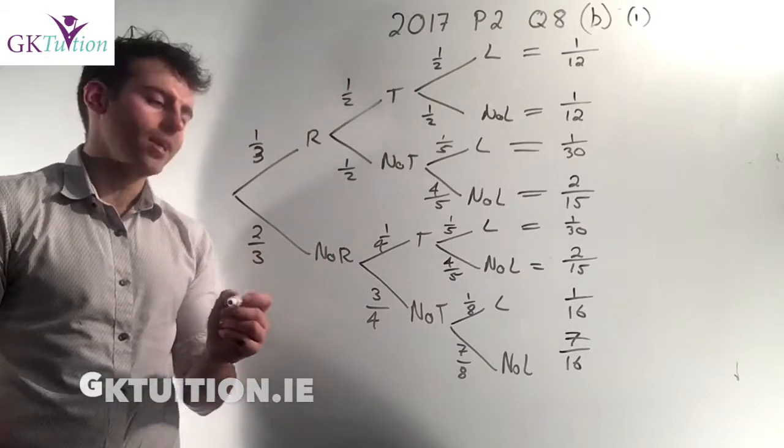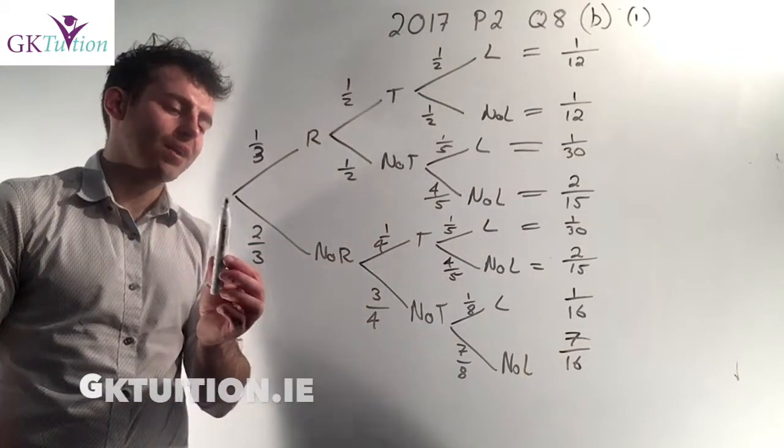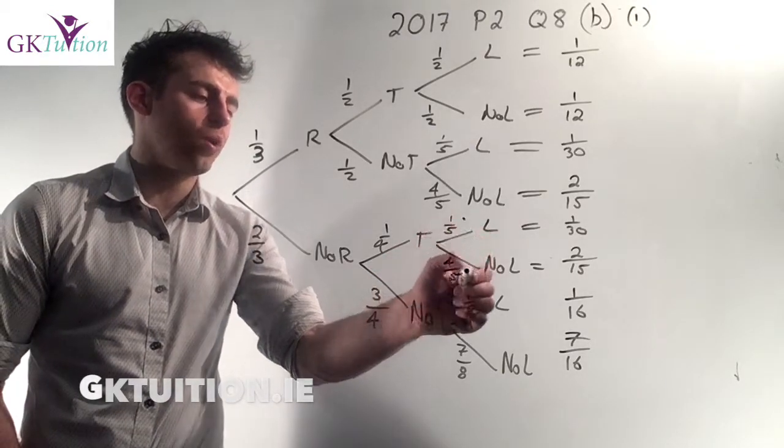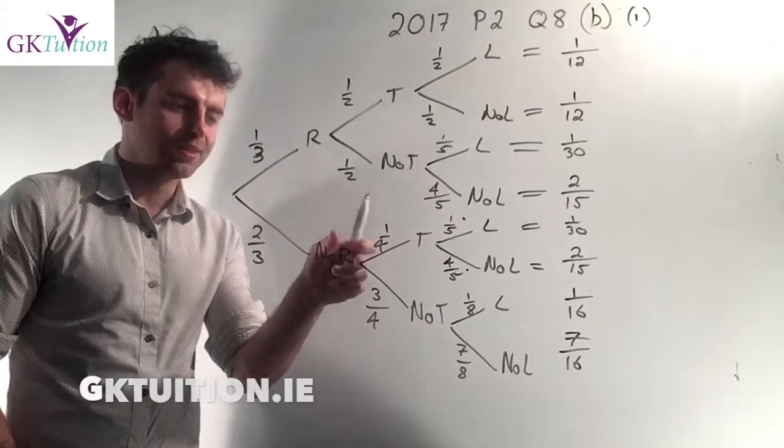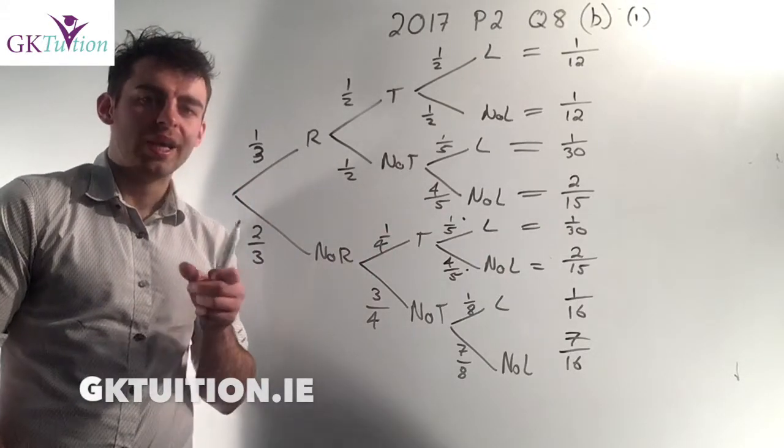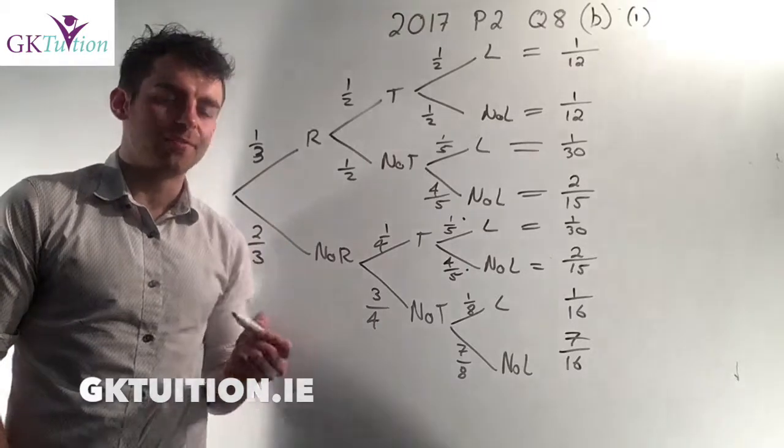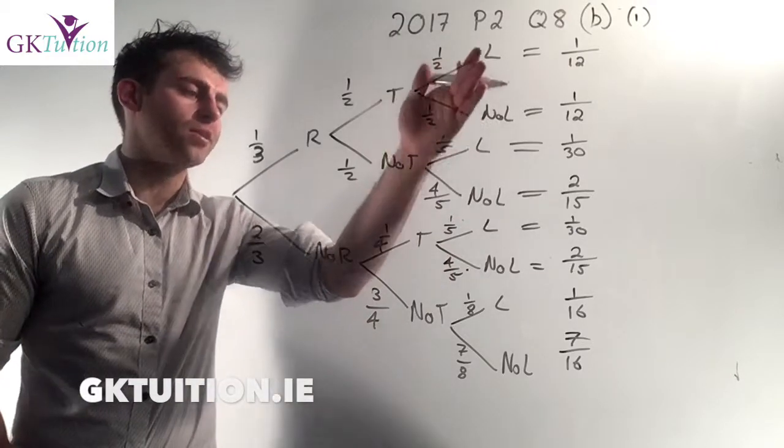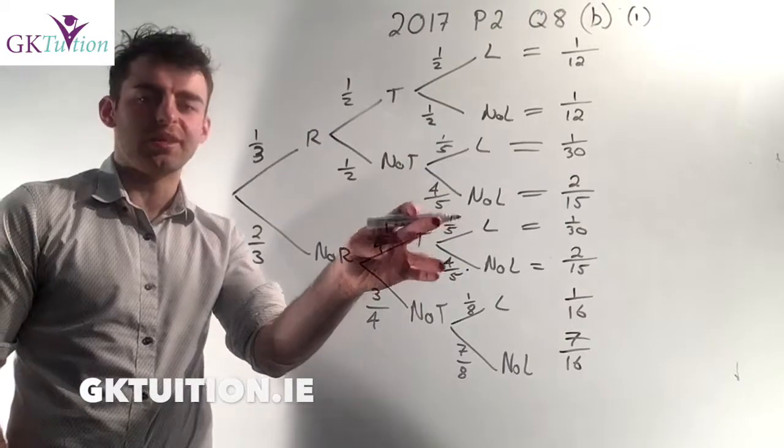In my experience the one thing that students often struggle with is this one here. The probability that there's no rain, there's traffic and then often they struggle with what goes in these two places. If you notice at the very last sentence, the very last piece of information they've given you, it says in any other situation the probability of being late for school is one fifth. And by the time you've gotten to that stage, you should have filled in all your other branches and the only two branches you're still concerned with are these two.